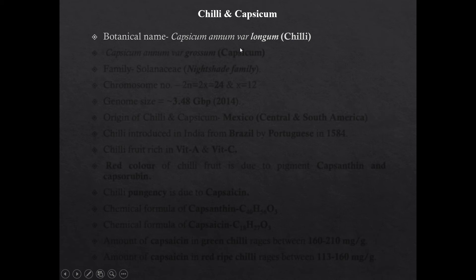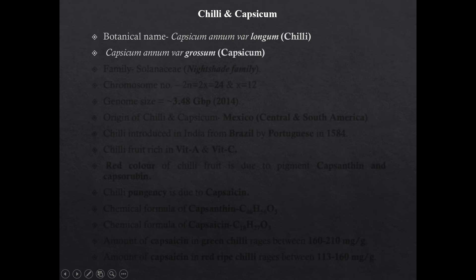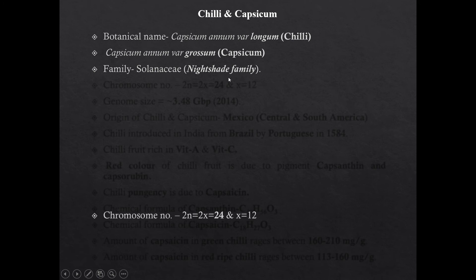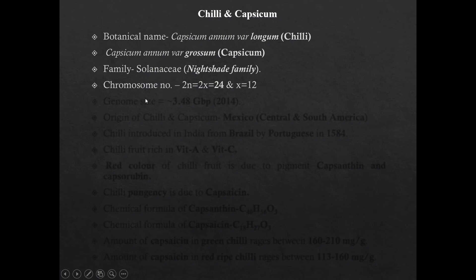Chili botanical name is Capsicum annum variety longum. The botanical name of capsicum, also known as bell pepper or sweet pepper, is Capsicum annum variety grossum. Both chili and capsicum belong to family Solanaceae, also known as the nightshade family. The chromosome number of chili and capsicum is 24.